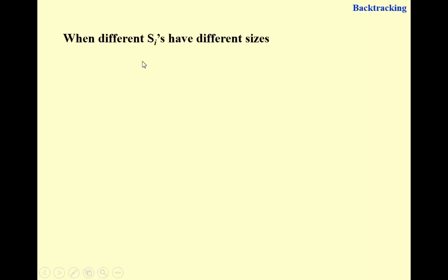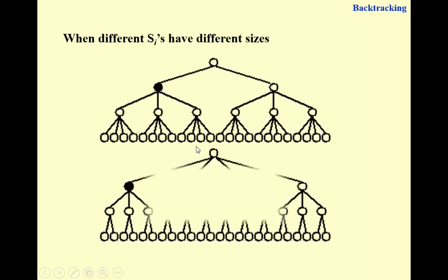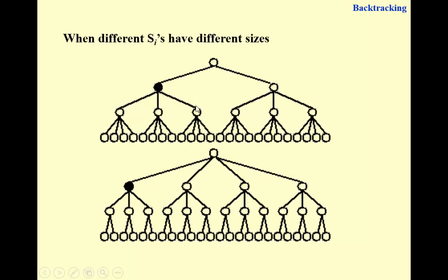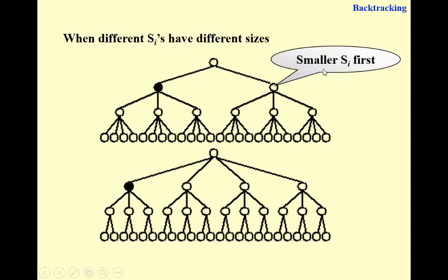One more thing: in complicated problems, different variables may have different option set sizes, and in this case the order of searching matters. If we have two options with different sizes, which would you prefer? The smaller size first — because if it doesn't work, we cut a larger subtree. That's why we prefer to search the smaller branch first.